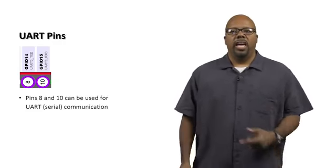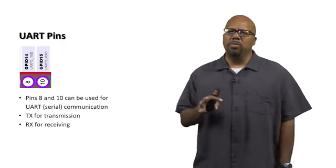If you remember UART, basically you're sending one bit at a time, and TX is the transmission pin. If you want to send serial data, UART data from the Raspberry Pi to another device, you send it on the TX. And on the receiving end, you receive it on the RX. That's the common way to do it, TX for transmission, RX for receiving.